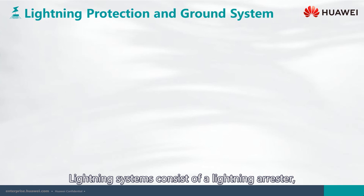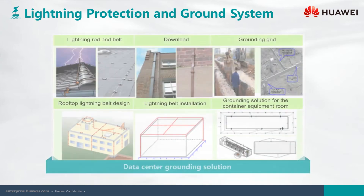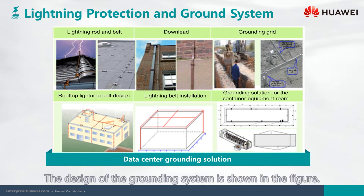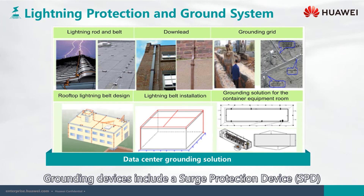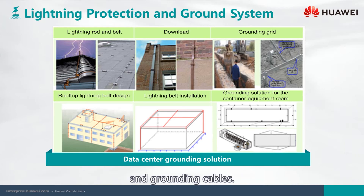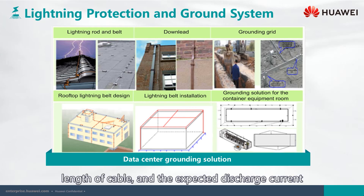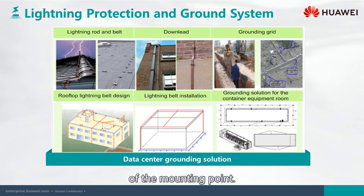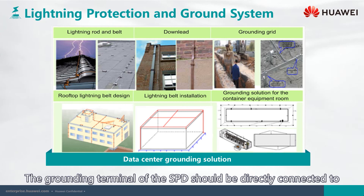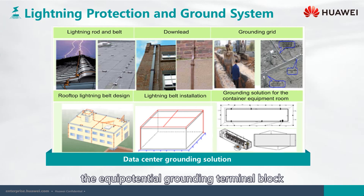Lightning systems consist of a lightning arrestor, down lead, and grounding devices. The design of the grounding system is shown in the figure. Grounding devices include a surge protection device (SPD) and grounding cables. The SPD's setting should consider the protection distance, length of cable, and the expected discharge current of the mounting point. The grounding terminal of the SPD should be directly connected to the equipotential grounding terminal block of the lightning protection zone at the shortest possible distance.